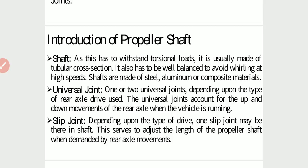Introduction to Propeller Shaft. As the propeller shaft has to withstand torsional loads, it is usually made of tubular cross section. It also has to be well balanced to avoid whirling at high speed. Shafts are made of steel, aluminum, or composite material. One or two universal joints are used depending on the type of rear axle drive. The universal joint accounts for the up and down movement of the rear axle when the vehicle is running and is used to tolerate linear or angular misalignment.